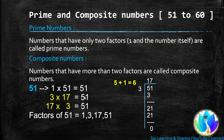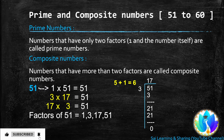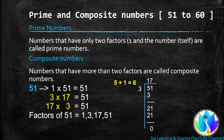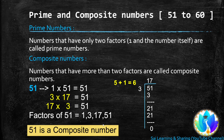So 3 times 17 equals 51. 51 is not a multiple of 4 or 5. There is no other combination in the multiplication tables from 2 to 12. At last, 17 times 3 equals 51. Now we got all the factors of 51: 1, 3, 17, and 51. Since 51 has more than 2 factors, 51 is a composite number.